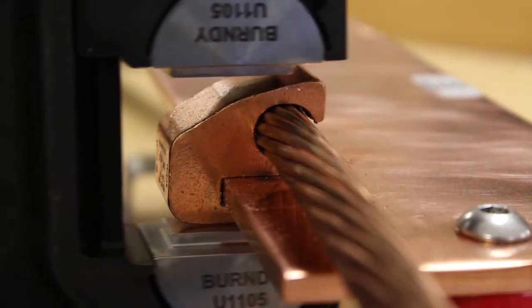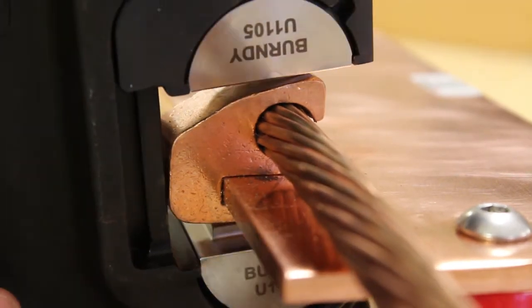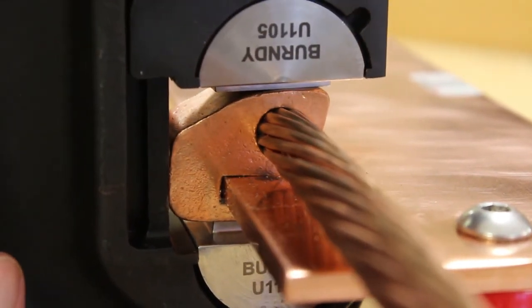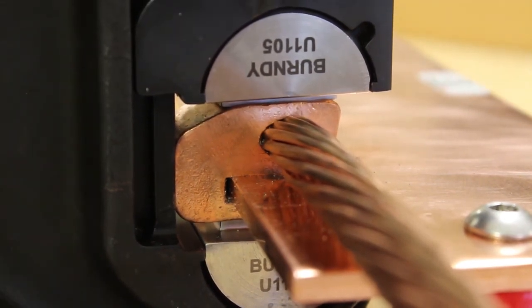Place the connector into the center of crimping dies that are placed in the tool head. Crimp the connection until you hear an audible click from PAT750, indicating the tool has gone full cycle and the crimp is complete.